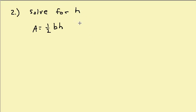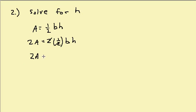Let's solve for H. Here I have a fraction, so I want to get rid of the fractions. I'm going to multiply by the common denominator, which in this case is 2. So I get 2 times A equals 2 times one-half times B times H. The 2's cancel, so I'm left with 2A equals B times H. Then I need to divide both sides by B, so I get H equals 2A over B.